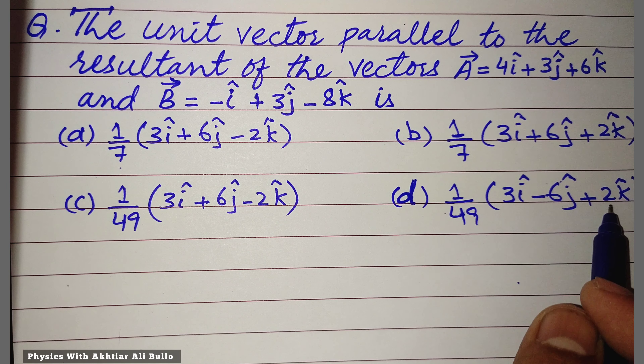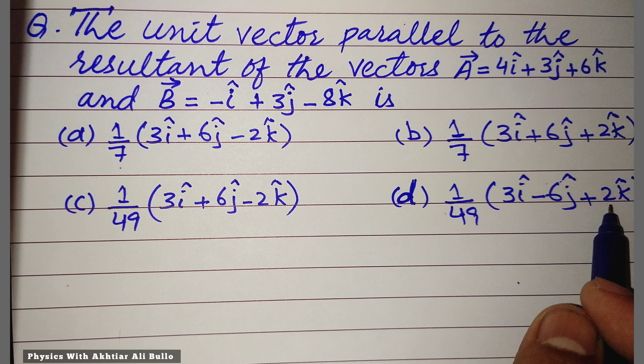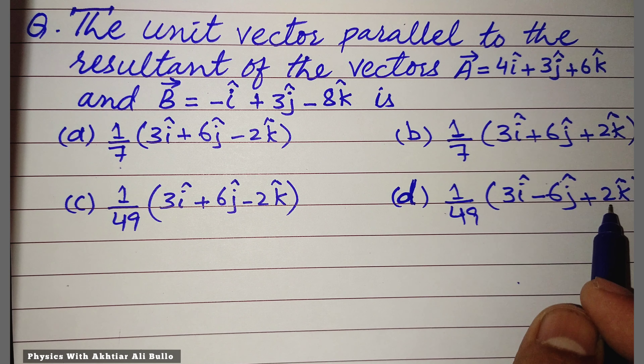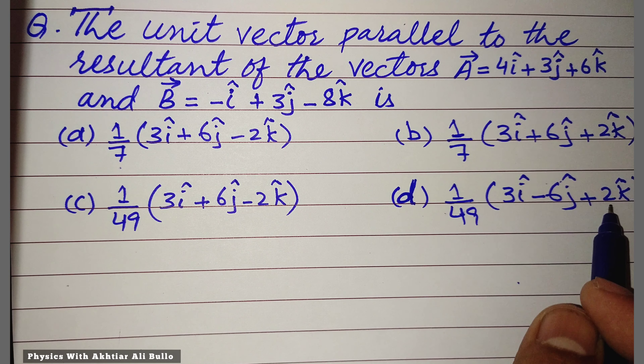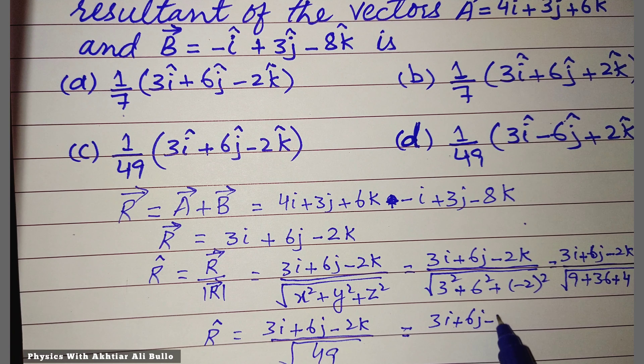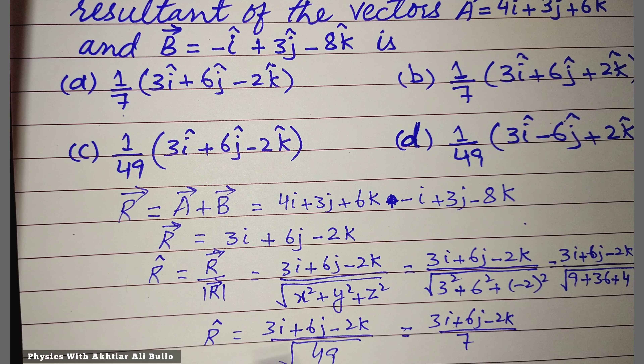So the unit vector will be equal to (3i + 6j - 2k) divided by √(9 + 36 + 4) = √49 = 7. Therefore the unit vector is (3i + 6j - 2k) / 7, which can also be written as 1/7 into (3i + 6j - 2k). So the correct option is (a): 1/7 into (3i + 6j - 2k).